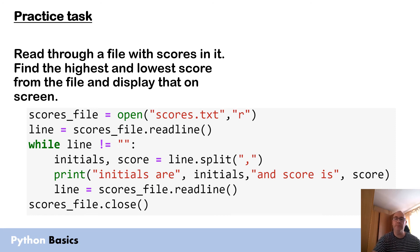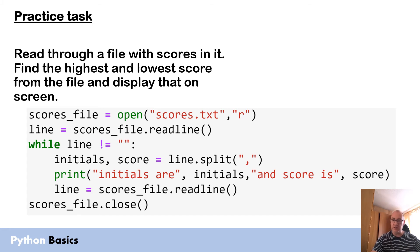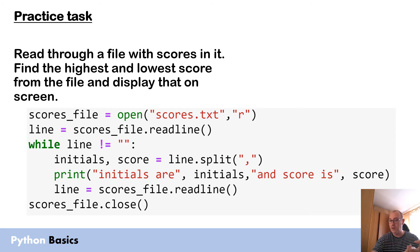This practice task is going to take the code we've just looked at and adapt it. Start off with this code, and instead of printing, look for the high score and the low score. You'll need some selection and more variables. As a big hint — you need to store both the score and the name; you can't just store the high score and low score because you don't know whose score they are unless you store the name as well. So you need four variables: two for the highest and two for the lowest — high score, high name, low score, low name — then use if statements to keep it working.